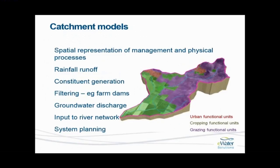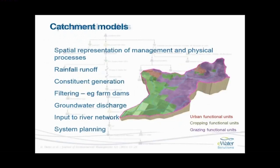Catchment models — a very brief introduction. It's a semi-lumped spatial representation of management and physical processes, so it has rainfall-runoff models. We have constituent generation, which could be salt, nutrients, or other pollutants. We have some filtering, such as farm dams. We have the option of looking at groundwater interactions and we can transfer output from a catchment model into a river network and system planning model. We can also integrate the planning functionality into the catchment model, so we can have reservoirs and water management options within the rainfall-runoff models.